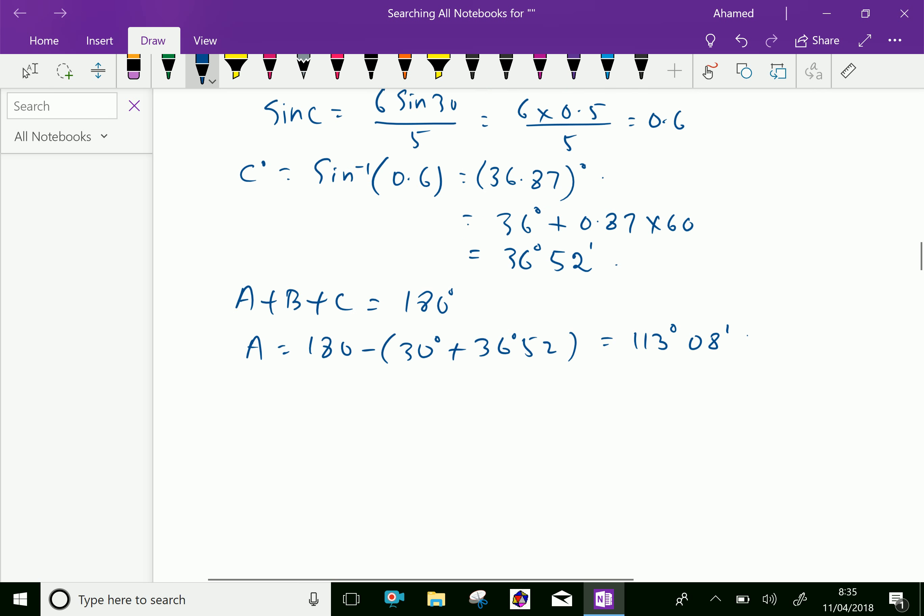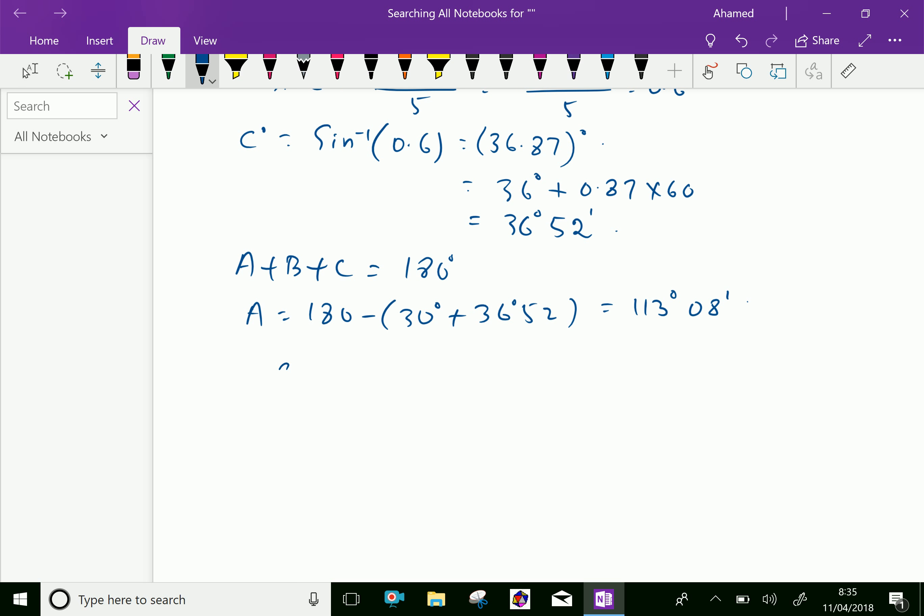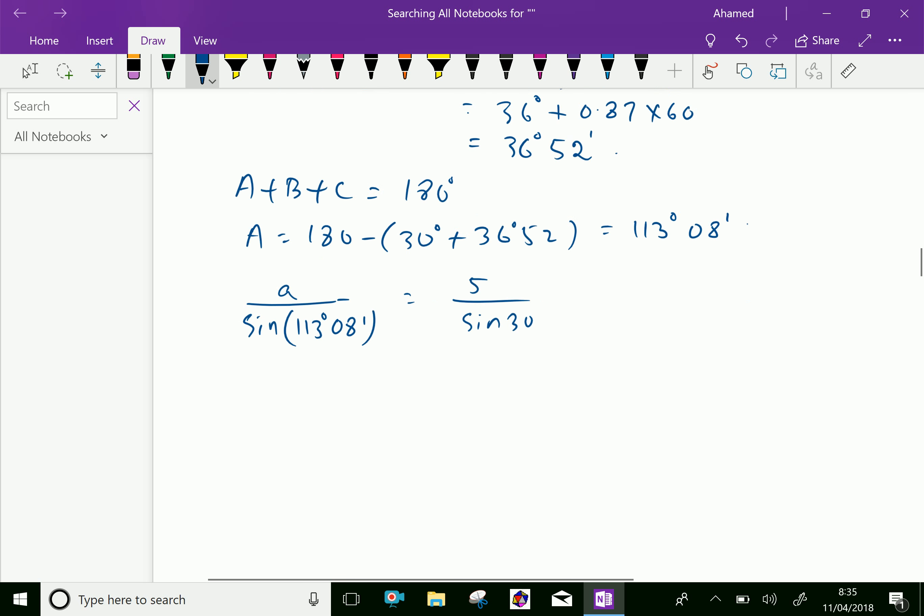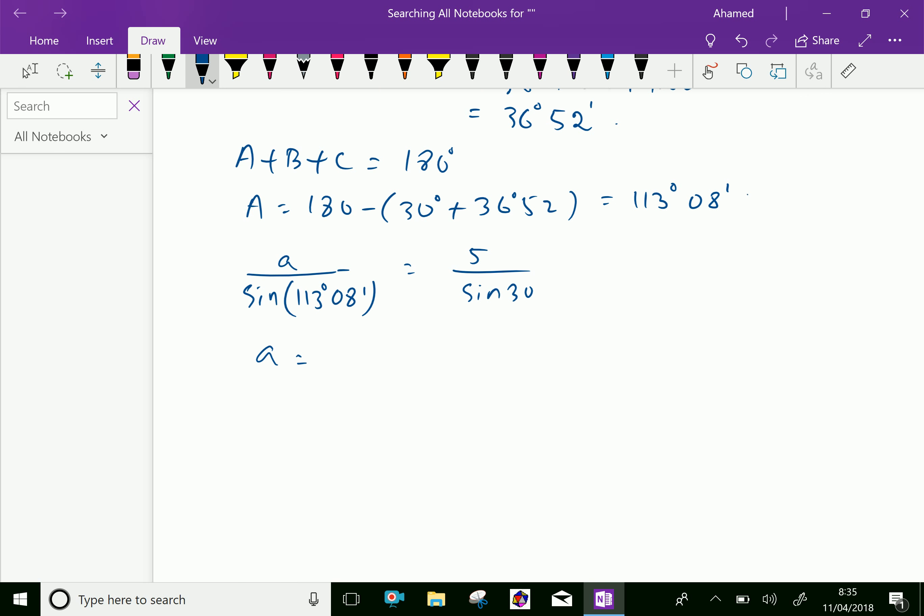Now we'll use one more relation: a over sine A, that is sine of 113 degrees 08 minutes equals 5 over sine 30. Therefore, a equals 5 over sine 30 times sine of 113 degrees 08 minutes.